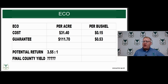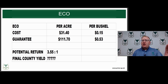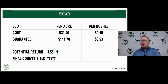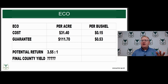As we look towards ECO, this is the big question: should we consider doing this? It is an expensive product. The cost of ECO is running $31.40 an acre with a potential guarantee or return up to $111.70 an acre. We need to put this back to a per-bushel basis so we can compare it to options. The cost for this ECO program runs around 15 cents a bushel with a potential return up to 53 cents a bushel.